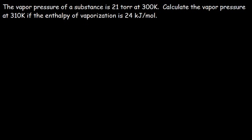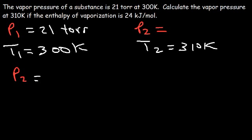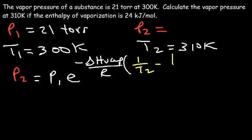Let's try this problem. The vapor pressure of a substance is 21 torr at 300 Kelvin. Calculate the vapor pressure at 310 Kelvin if the enthalpy of vaporization is 24 kilojoules per mole. So P1 is 21 torr, T1 is 300 Kelvin, T2 is 310 Kelvin, and we're looking for P2 using the equation P2 = P1 × e^(−ΔH_vap / R × (1/T2 − 1/T1)).